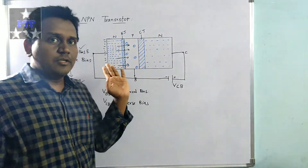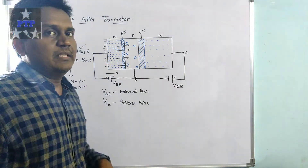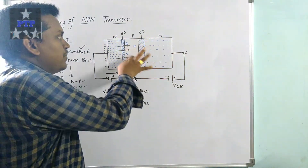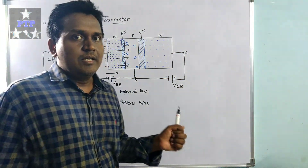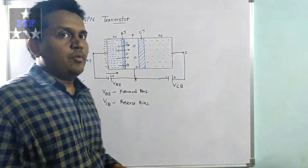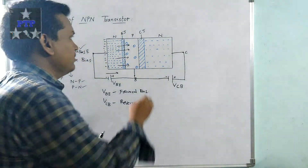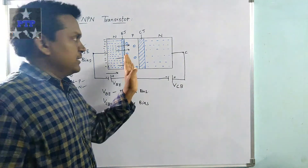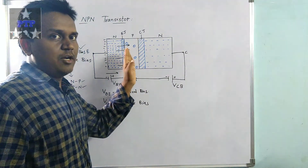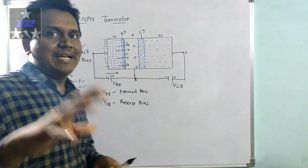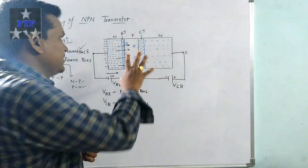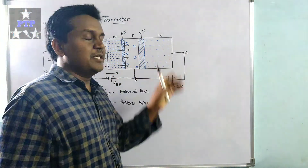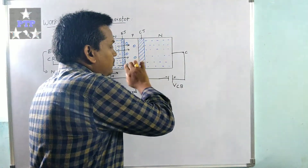For example, consider 100% of electrons moving towards the base. Since the base doping is very less, only 10% of electrons settle in the holes and are neutralized. The remaining 90% of electrons are pushed towards the collector. This happens because only a small number of holes are available in the base to attract electrons.